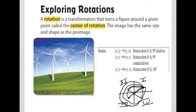Now let's make sure we understand the coordinate formulas. If you rotate about the origin 90 degrees clockwise, then y becomes your new x and x becomes negative — so the new point is (y, -x). If you rotate 90 degrees counterclockwise, y becomes your new x and y becomes negative — new point is (-y, x). If you rotate 180 degrees, x and y remain but both become opposite — new point is (-x, -y).